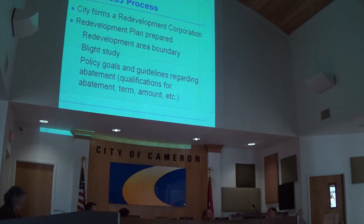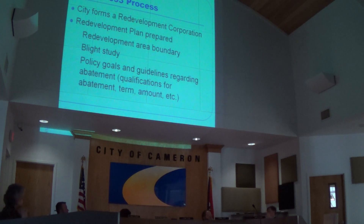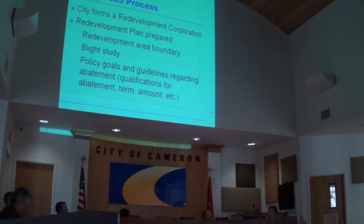Say a property owner commits to $150,000 of improvements — fixing the roof, fixing the building, putting in new windows, making the second floor office space. Then based on the city's policy, that property owner could receive a 100% tax abatement to help make up that $150,000 investment.